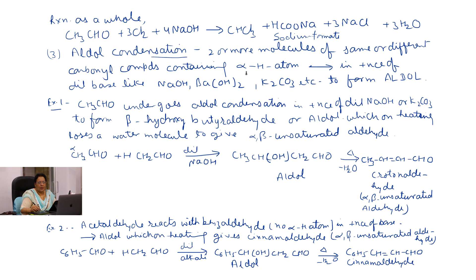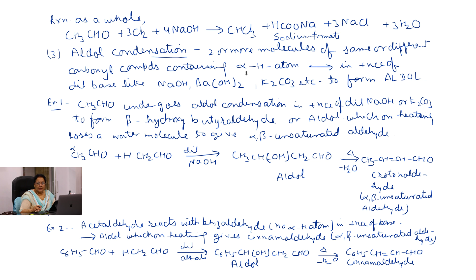The next property is aldol condensation. This is an important property of aldehydes. When two or more molecules of the same or different carbonyl compounds containing alpha hydrogen atoms unite together in the presence of dilute alkali like NaOH, barium hydroxide, or potassium carbonate, they form an aldol. Acetaldehyde undergoes aldol condensation in the presence of dilute NaOH or K2CO3 to form aldol.